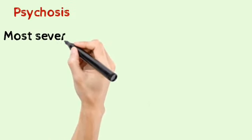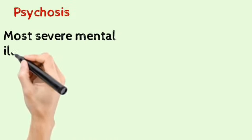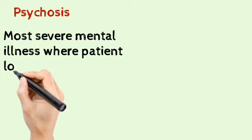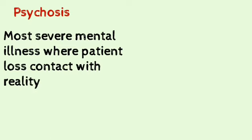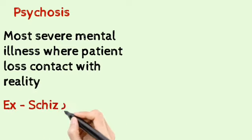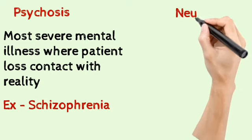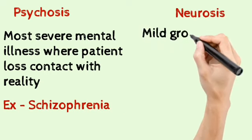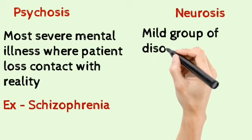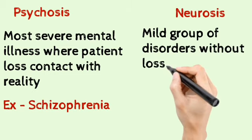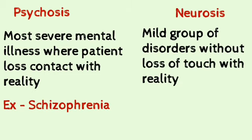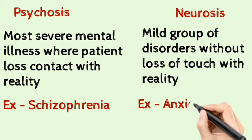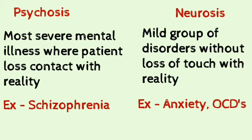Psychosis is the most severe mental illness where the patient will tend to lose contact with reality — an example is Schizophrenia. Neurosis is a mild grade of disorder where the patient will not lose contact with reality; examples include Anxiety and OCDs.